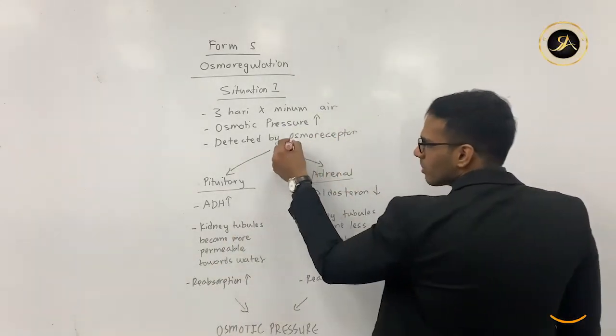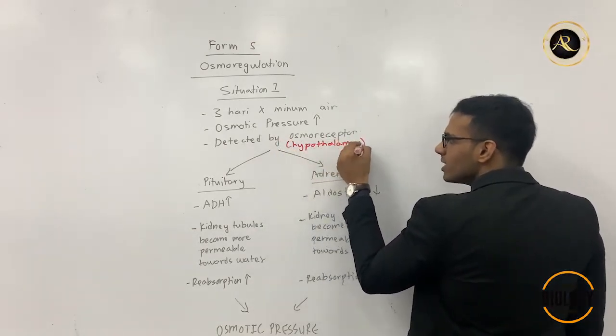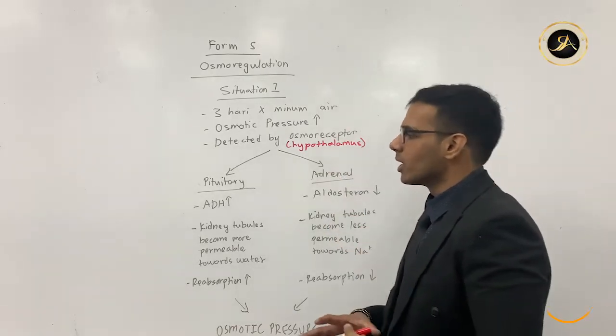When osmotic pressure increases, this will be detected by your osmoreceptor. Osmoreceptor over here is located in your hypothalamus.